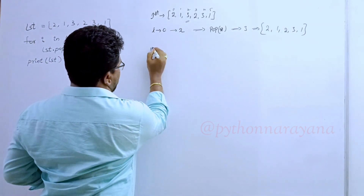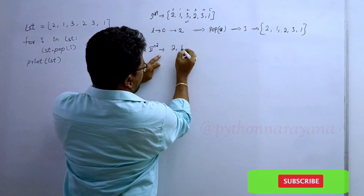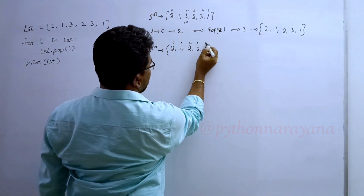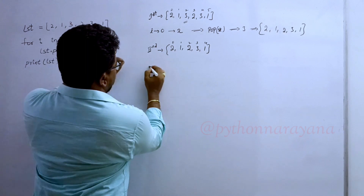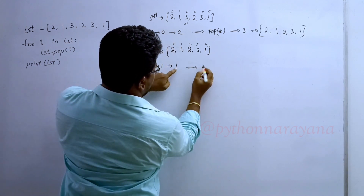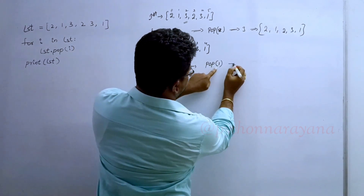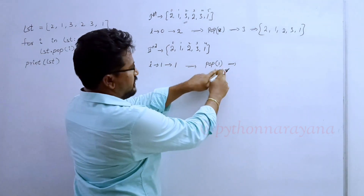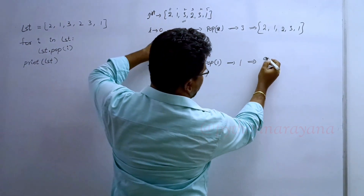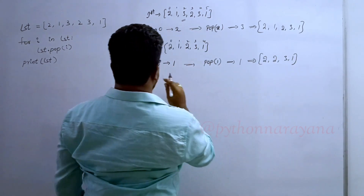Now let us go to the second iteration. In the second iteration, it will take the present list, that is 2, 1, 2, 3, 1. Index numbers are 0, 1, 2, 3, 4. Second time, i-value is index number 1. At index number 1, what is there? 1 is there. So pop(1) — it takes 1 as index number. At index 1, element 1 is there, so it will be deleted. The remaining list after iteration 2 is 2, 2, 3, 1.